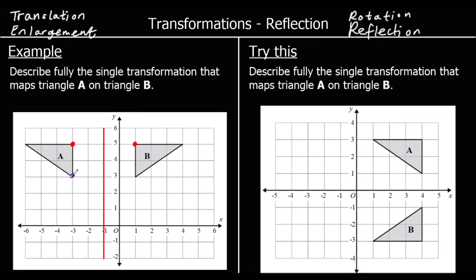We can do the same for each of the corners. This purple point is two away from the mirror line, and on B that same point will be two away on the other side. For this green point, it's five away from the mirror line, so for B we're going to have a point five away on the other side. So we know we've got the right mirror line.